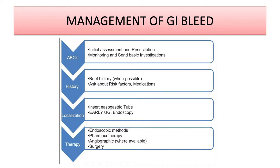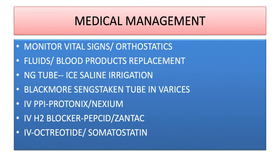Treatment begins with ABCs, history, localization of the bleeding site, and treatment. Initial assessment includes monitoring vital signs, brief history, asking about risk factors and medications such as Coumadin. Insert an NG tube if there is cell bleeding. Upper GI endoscopy should be performed if available — my prediction is that in the next 10 years ER doctors will be doing upper GI endoscopy routinely. Treatment modalities include endoscopic methods, pharmacotherapy, angiographic techniques to localize bleeding, and finally surgery.